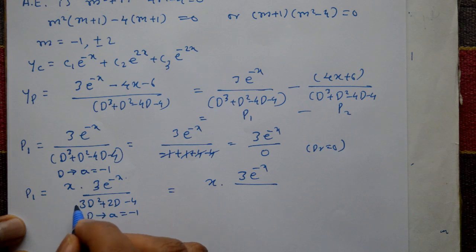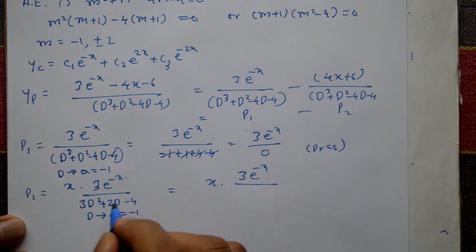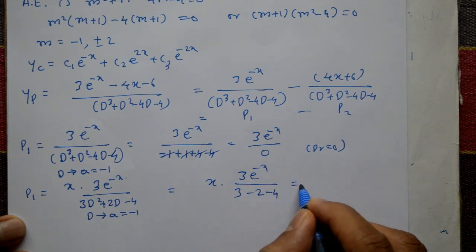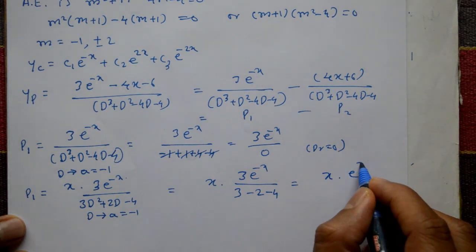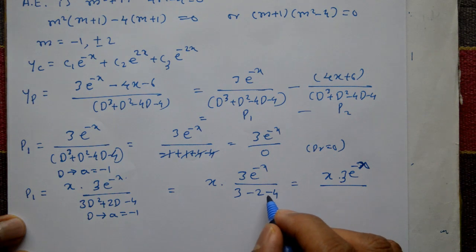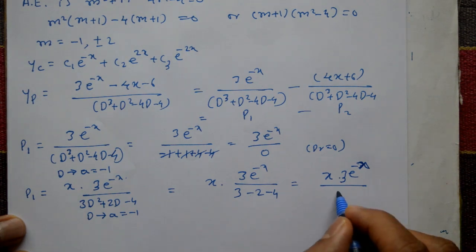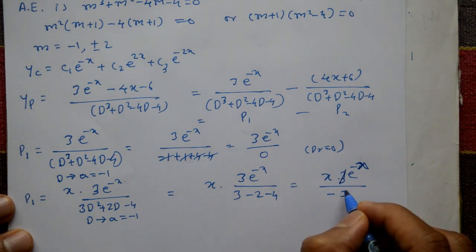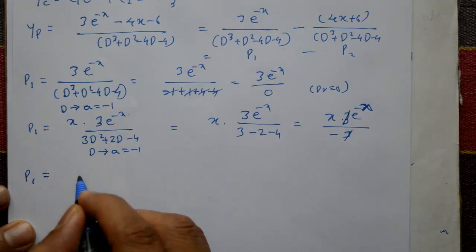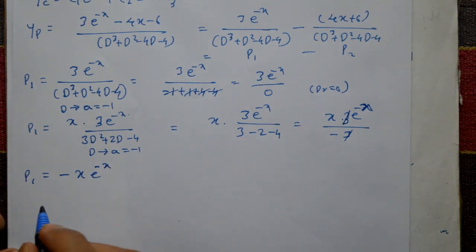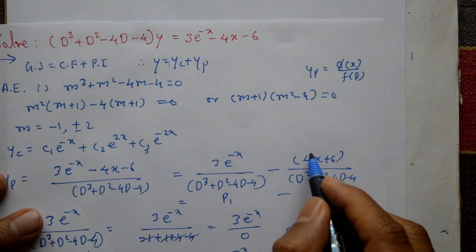Substituting D = -1 into f'(D): 3(-1)² + 2(-1) - 4 = 3 - 2 - 4 = -3. So P1 = x · 3e^(-x) / (-3) = -xe^(-x). The 3 and -3 cancel, giving P1 = -xe^(-x).